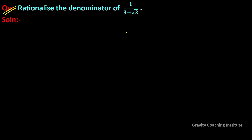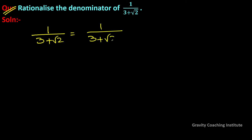Question: Rationalize the denominator of 1 upon 3 plus root 2. Solution: 1 upon 3 plus root 2. To rationalize its denominator, we multiply by 3 minus root 2 upon 3 minus root 2.